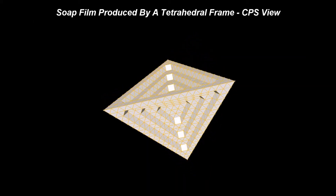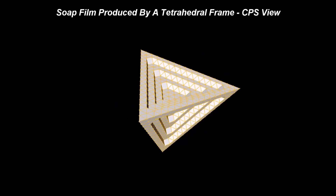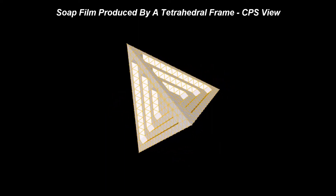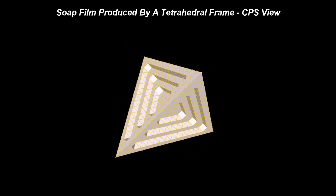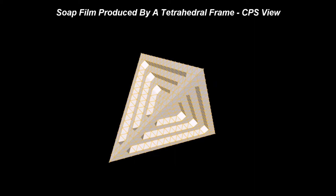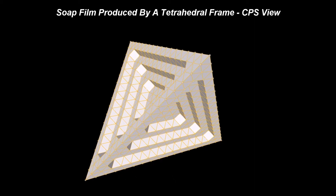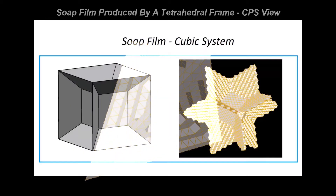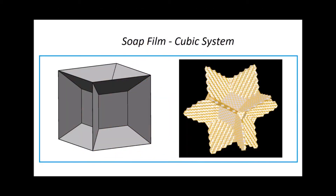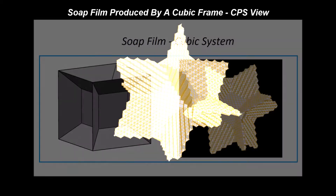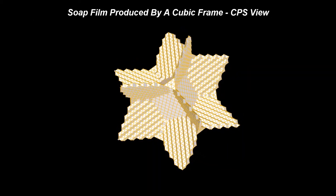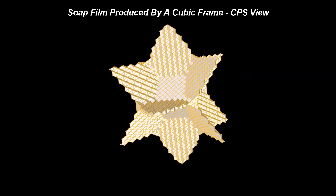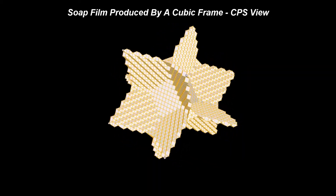The first scenario is the shape of the soap film produced by a tetrahedral frame, and the second is the shape of the soap film produced by a cubic frame. There are some other solids that are based on these minimum surfaces, and two well-known such solids are presented next.